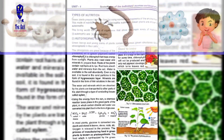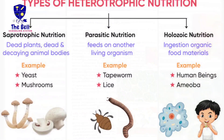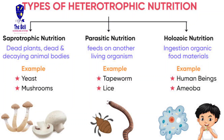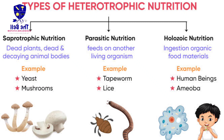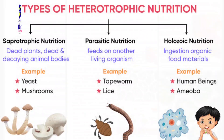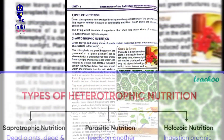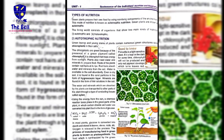On the other hand, we have heterotrophic nutrition. Heterotrophic nutrition وہ nutrition ہوتی ہے جس میں organism اپنا کھانا خود نہیں بنا سکتا، یعنی دوسروں پر depend کرتا ہے۔ جیسے کہ animals اور human beings — تمام animals اپنا کھانا خود نہیں بناتے بلکہ کسی نہ کسی پر depend کرتے ہیں۔ Human beings بھی plants پر depend کرتے ہیں — vegetables، fruits اور animals کا گوشت کھا کر nutrition حاصل کرتے ہیں۔